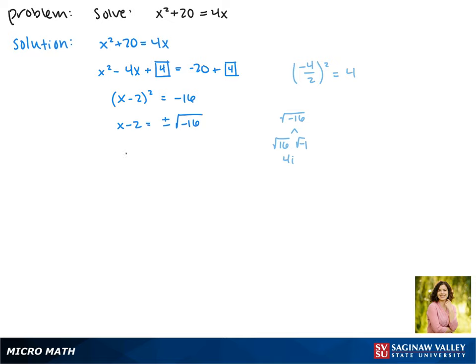Plugging that back into our equation, we get x minus 2 equals plus or minus 4i. Solving for x, we see that our solutions are 2 plus or minus 4i.